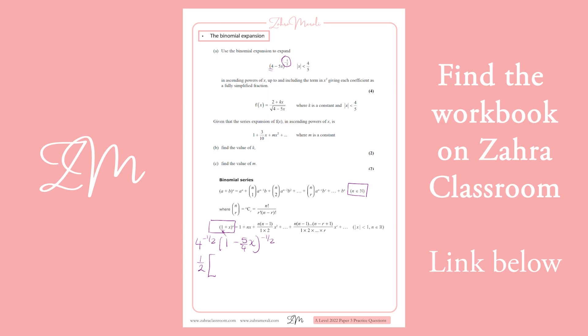So we end up getting 1 plus minus a half, which is your n, times your x, which is minus 5 over 4x, plus n, which is minus a half. n minus 1, which will give you minus 3 over 2, over 1 times 2, and then minus 5 over 4x all squared.